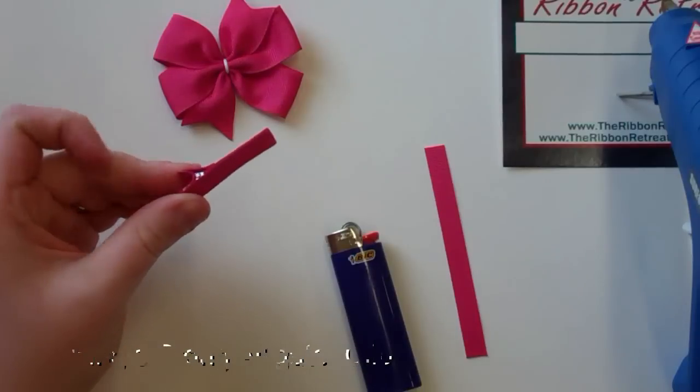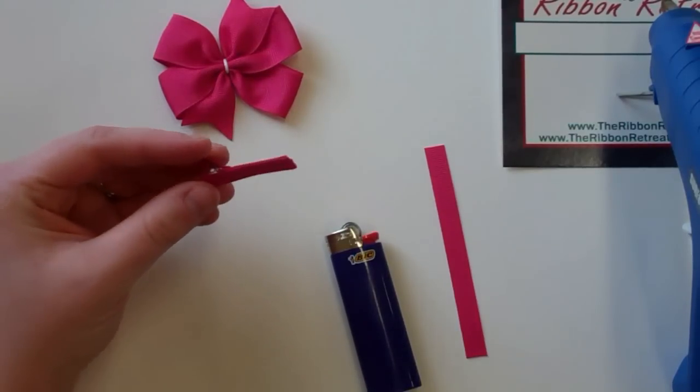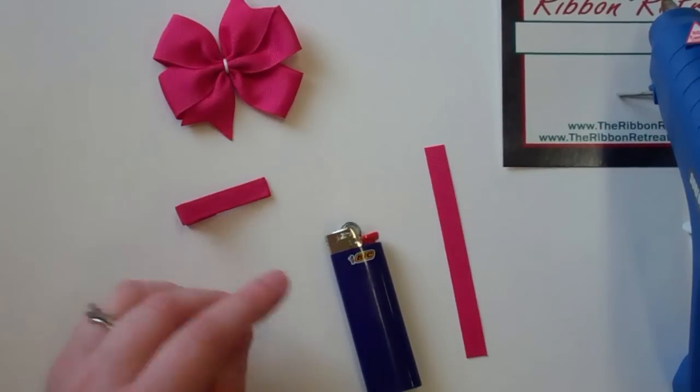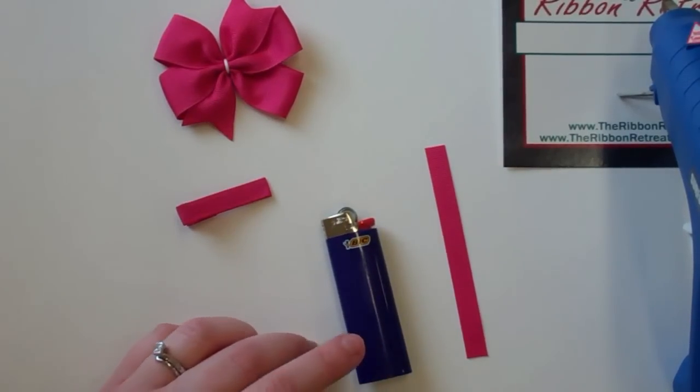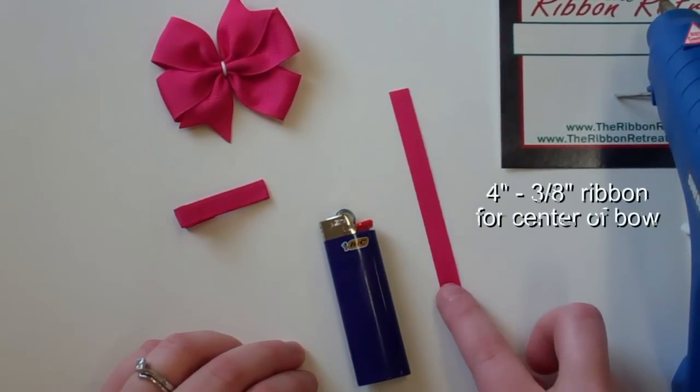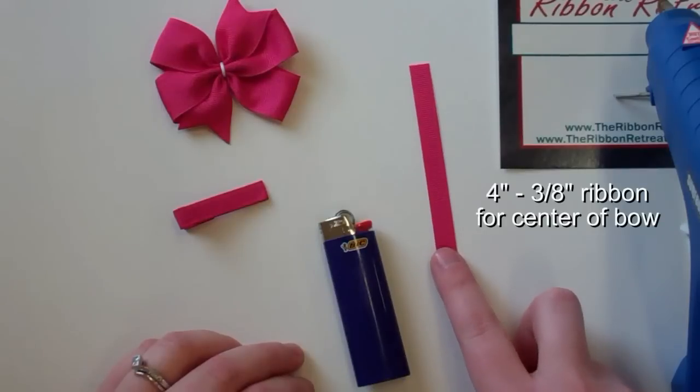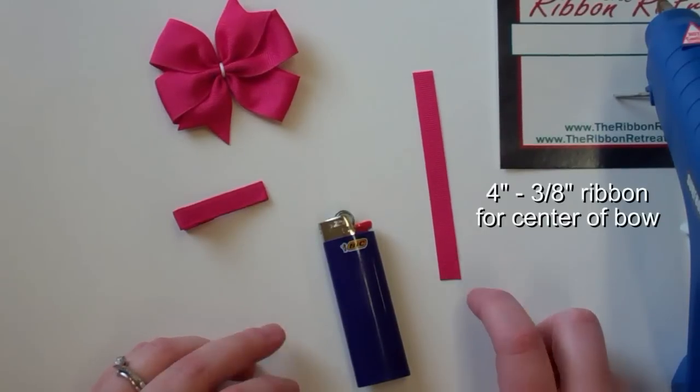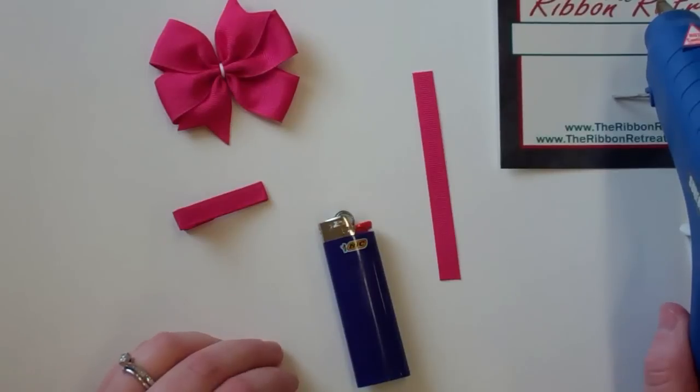You can see how to line the clips listed below. You'll need a lighter or a heat sealing tool. Approximately four inches of three-eighths ribbon for the center of the bow and a high temperature hot glue gun.